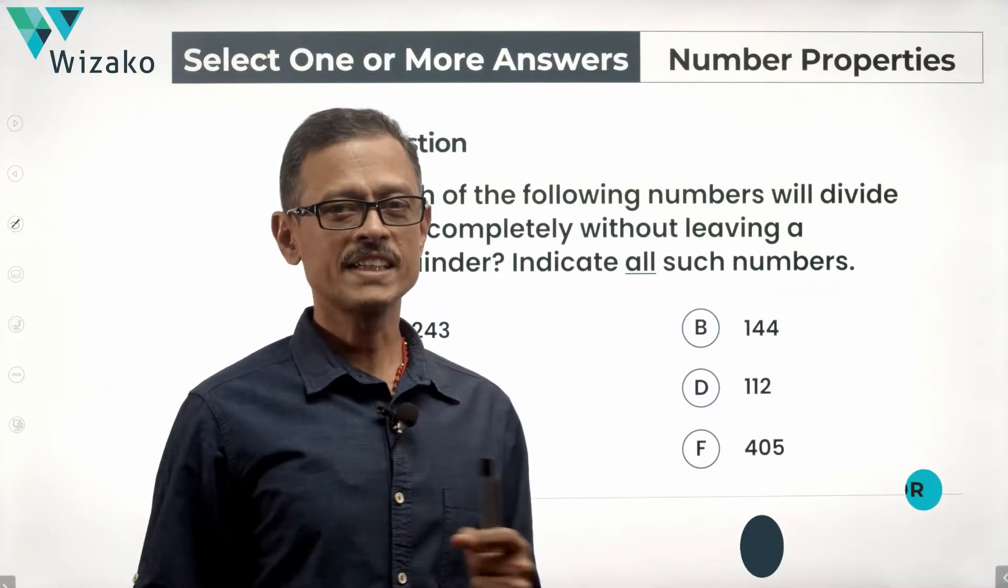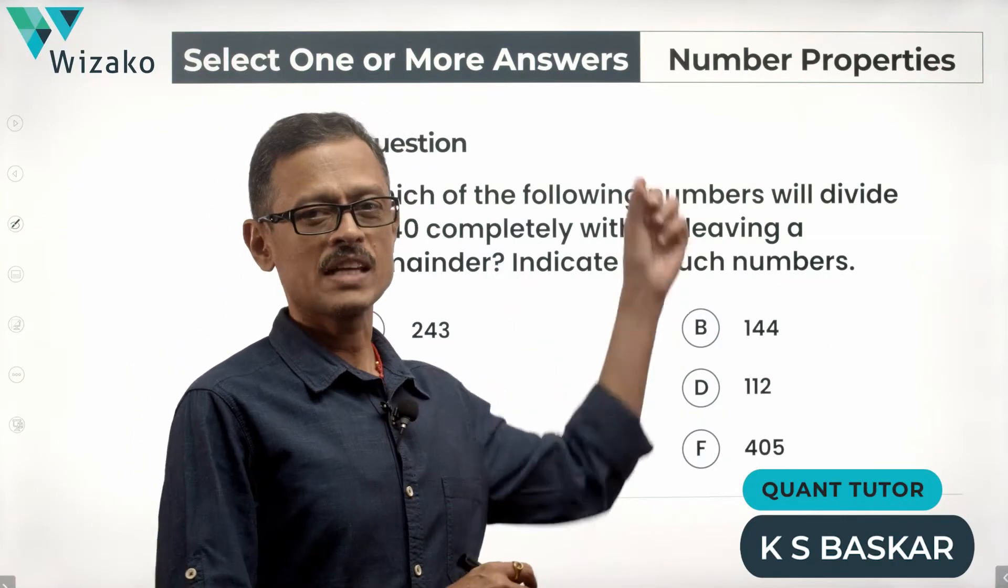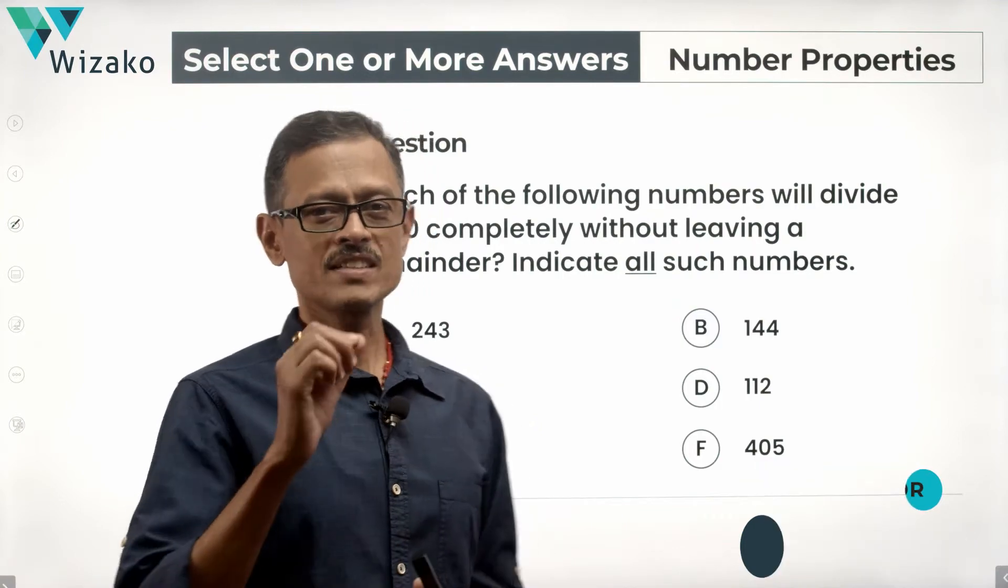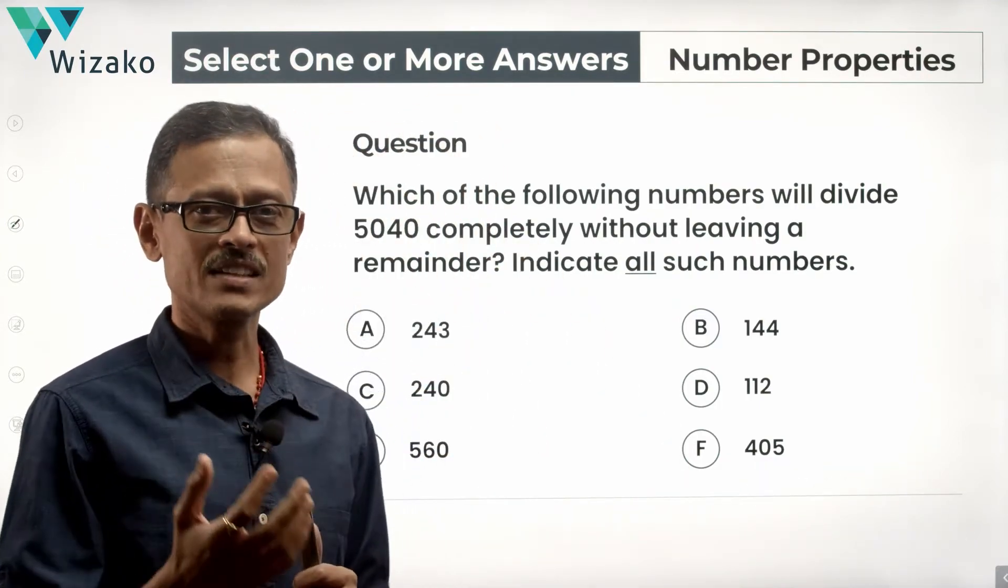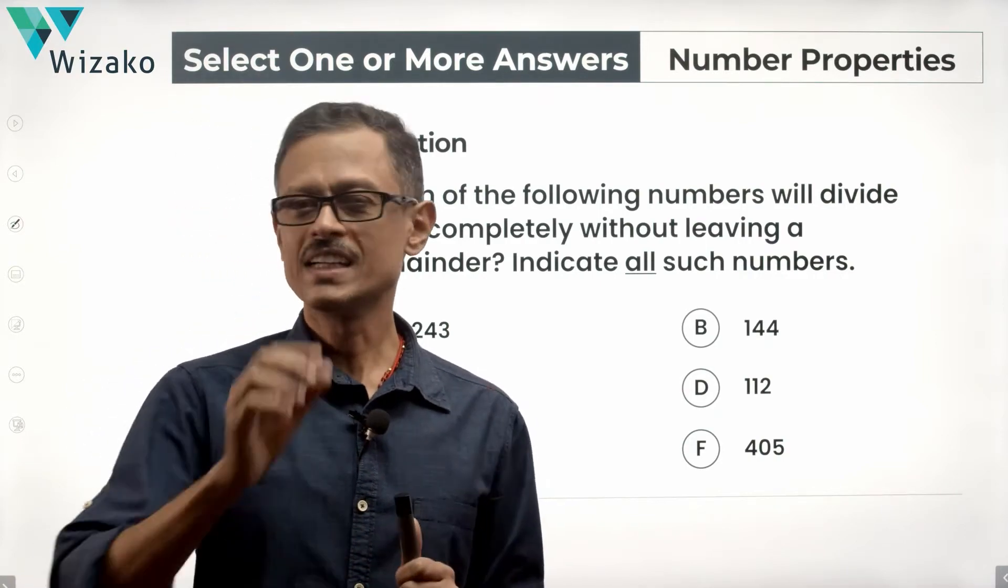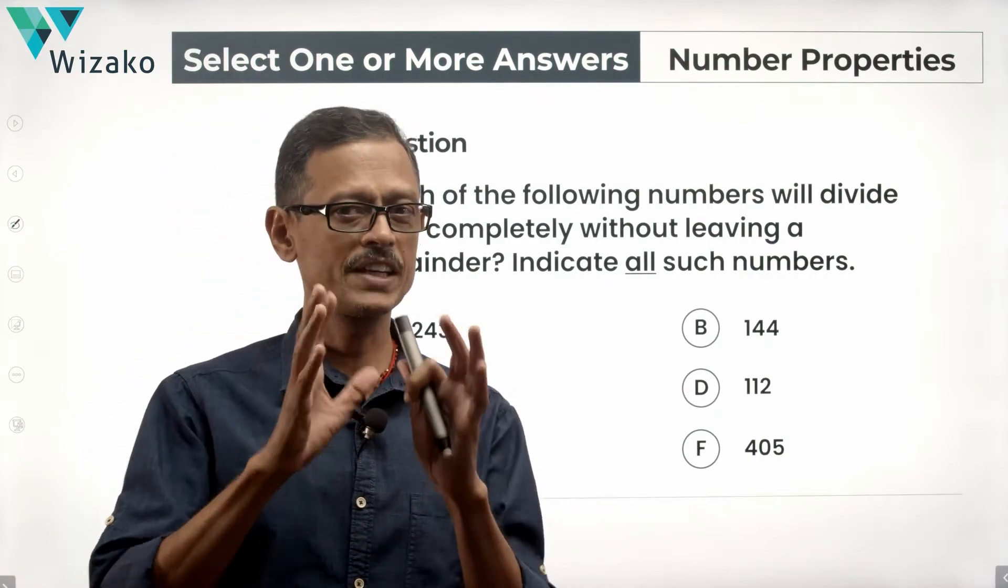Hello everyone. This is a GRE quantitative reasoning practice question from the chapter number properties. The question is set in select one or more answer format. What's the concept tested? The concept tested is divisibility of numbers. It's not test of divisibility, it's divisibility of numbers.